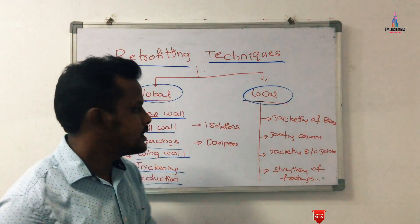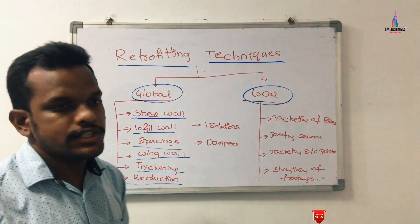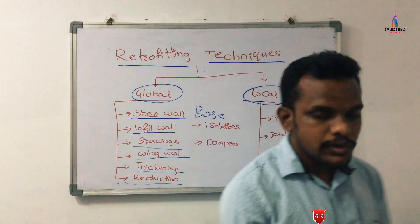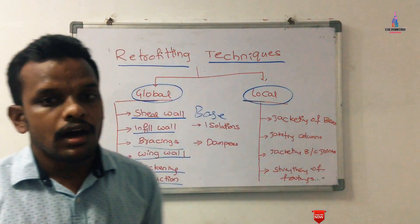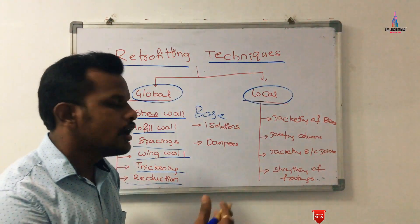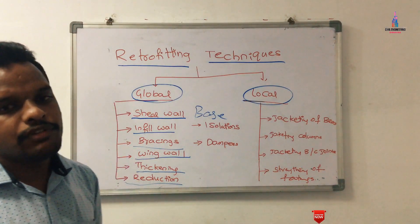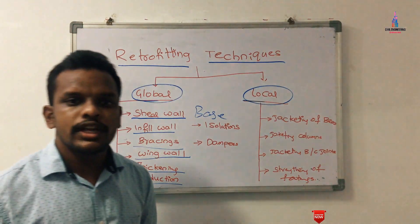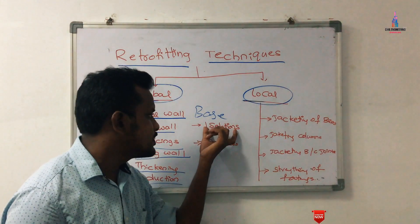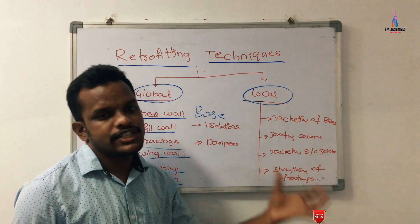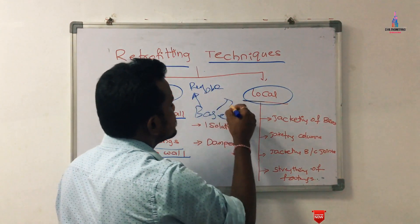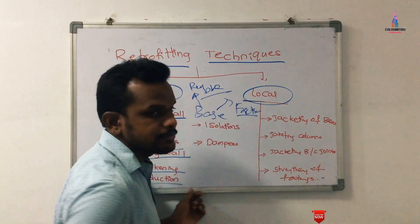Along with those six techniques, two more fall under global retrofication: base isolation and dampers. Base isolation means changing the support condition from a fixed base to a rubber base isolation system or friction pendulum system. This changes the deflection value because the lateral loading is applied to the supports initially. Under base isolation we have two techniques: rubber base isolation system and friction pendulum system.